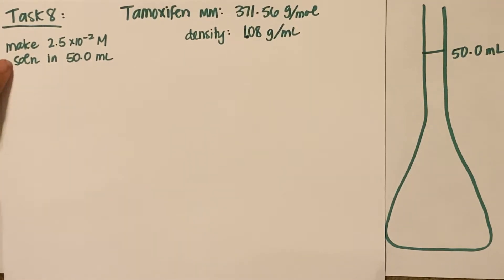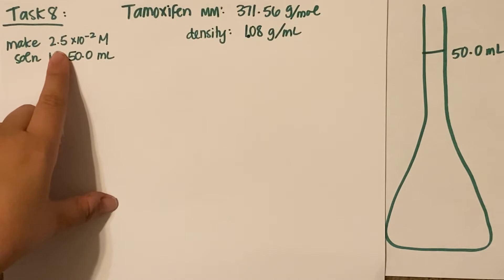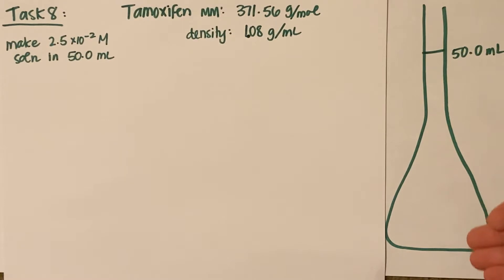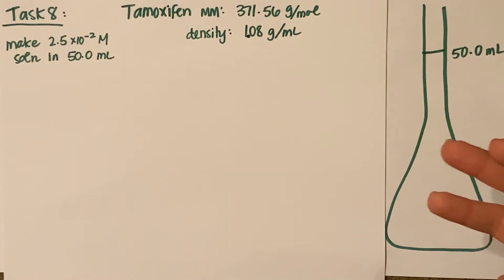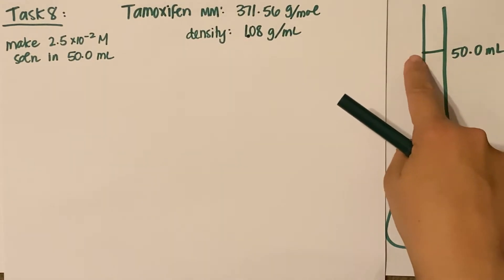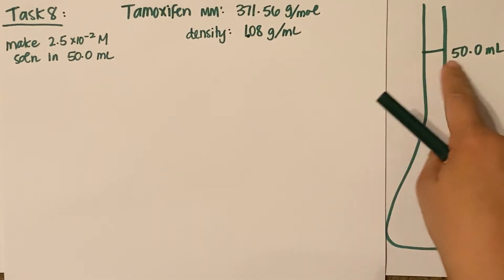The question asks you to make a 2.5 times 10 to the negative 2 molar solution in 50 milliliters. You get pictures of volumetric flasks, which are really accurate. Obviously not my horrid picture of one, but these flasks are great because they have just one line of measurement on them, and they're incredibly accurate for that one measurement.